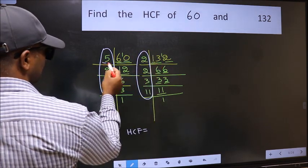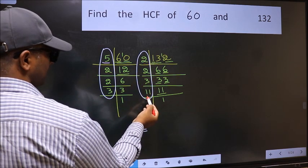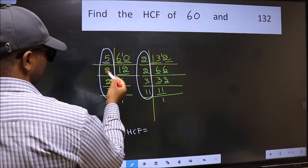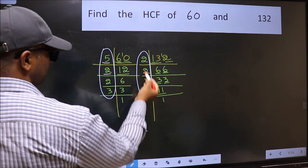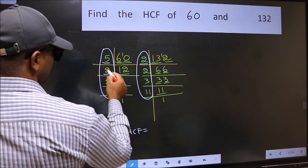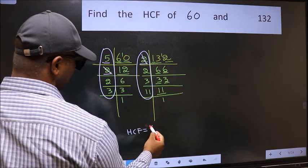Starting with the number 5. Do we have 5 here? No. Next number 2. Do we have 2 here? Yes. So cut 2 right here.